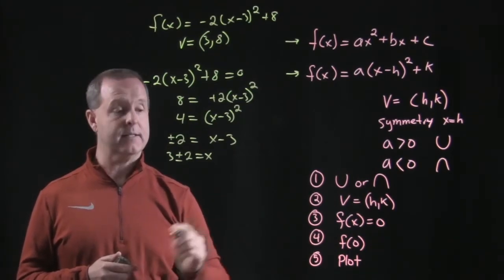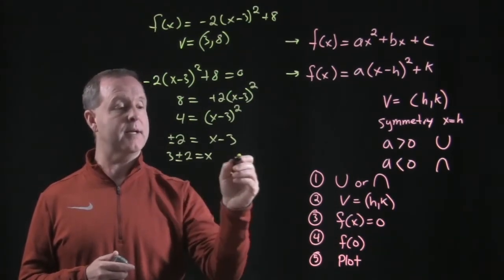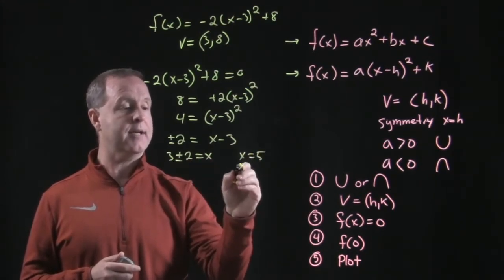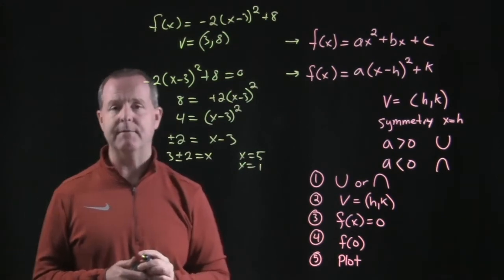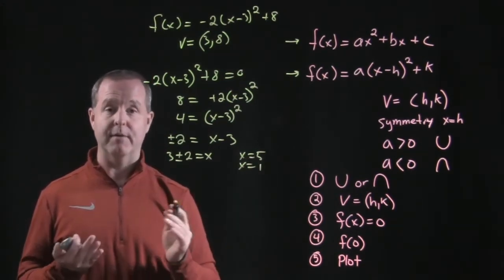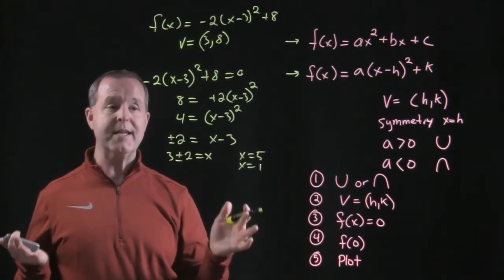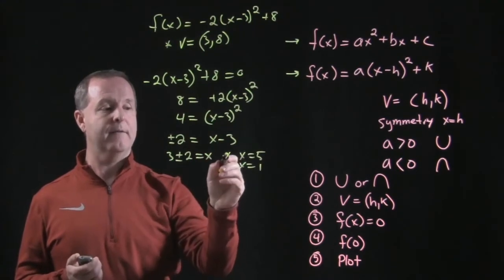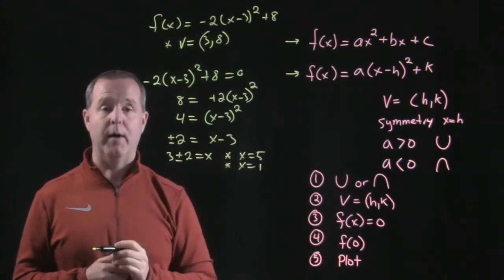And so my two values of x will either be 3 plus a 2, so x can equal a 5, or 3 minus a 2, x can equal a 1. So I know I have two places where it's going to cross the x-intercept at, at the points 5 and 1. So to recap, we have a vertex, and now we have two points.